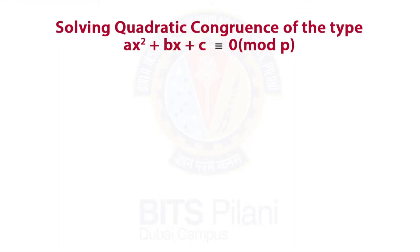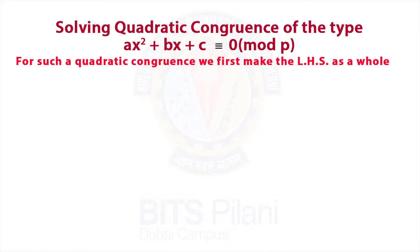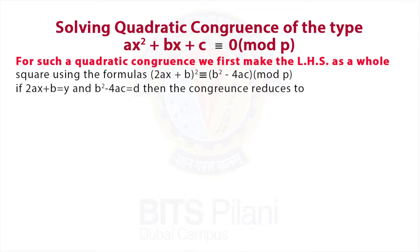Solving quadratic congruence of the type ax² + bx + c ≡ 0 (mod p). For such a quadratic congruence, we first make the left hand side as a whole square.